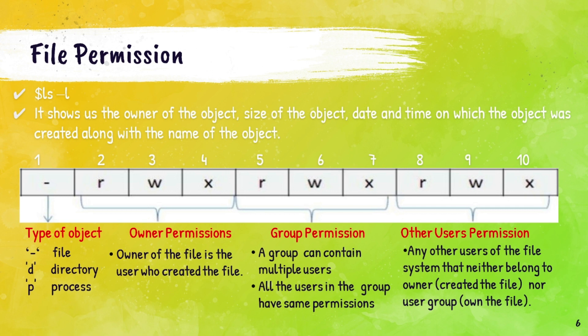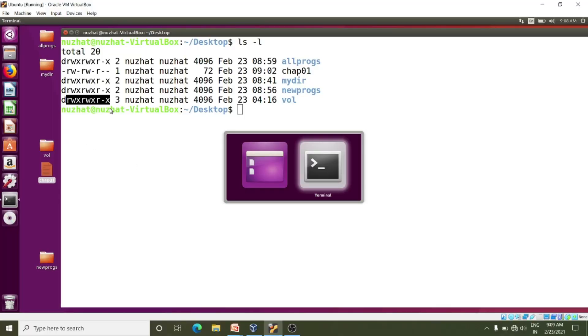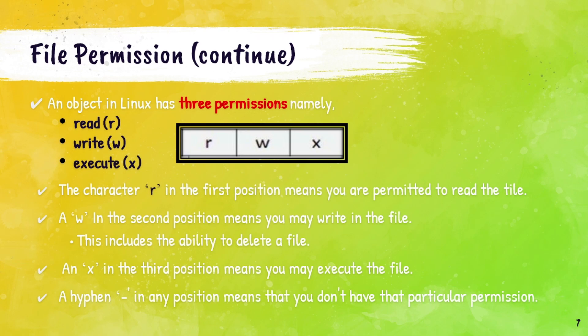You can add many users to a group and assign common group permissions to a file. Similarly, columns 8 to 10 indicate the permissions given to any other user — any user of the system who neither belongs to the owner nor to the user group. Everybody else who accesses the file is considered other. Now we will try to understand these nine characters — the permission given to an object. Every file object in Linux has three permissions: R for read, W for write, and X for execute.